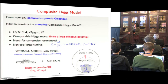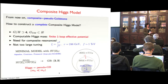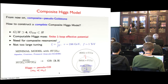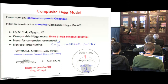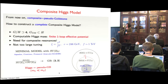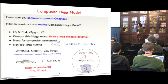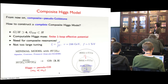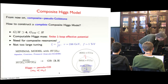With F equal to one TeV, the tuning is around 10%. The minimal model was proposed in 2004. It has a custodial SO(4) symmetry and is formulated in five dimensions describing the breaking of SO(5) to SO(4), with the Higgs as a pseudo-Nambu-Goldstone boson of this breaking.